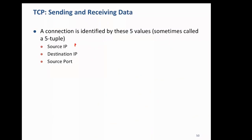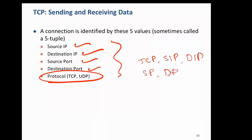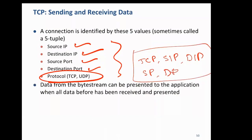A complete TCP connection is defined by: source IP address, destination IP address, source port number, and destination port number — plus specifying whether it is TCP or UDP. This 5-tuple completely defines a connection.